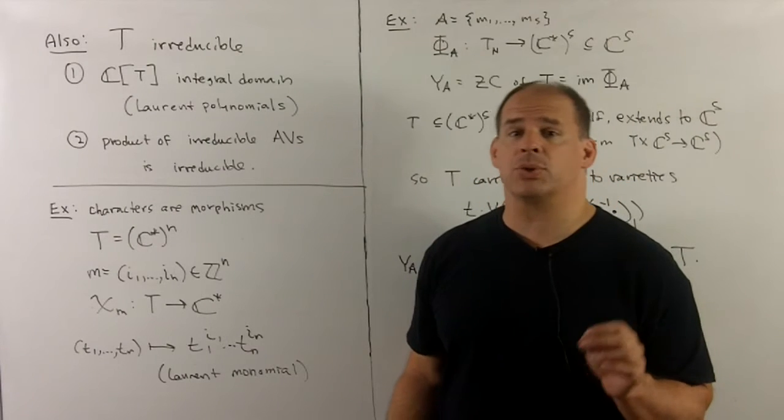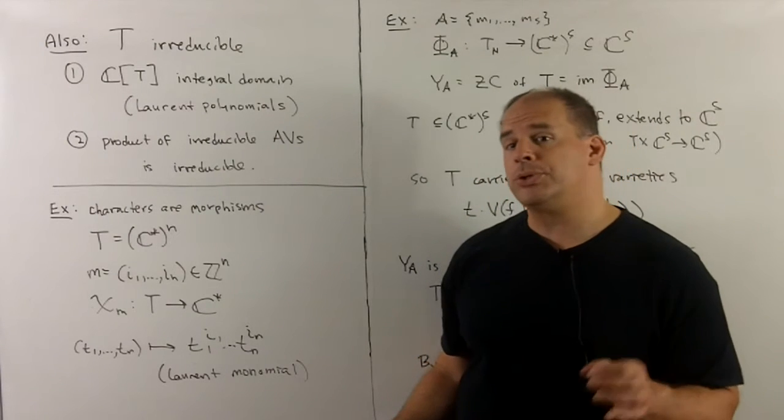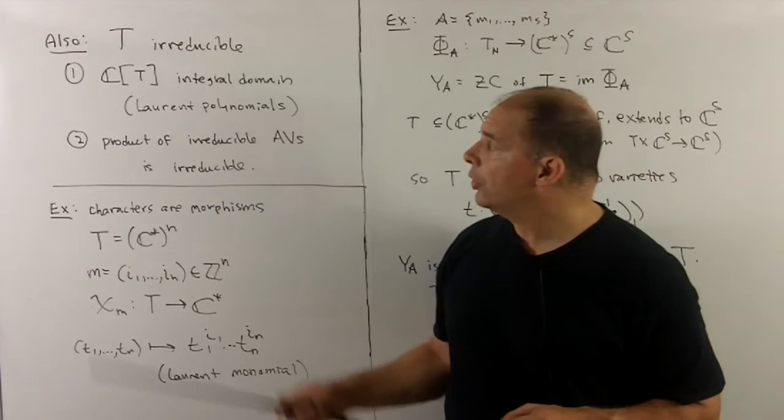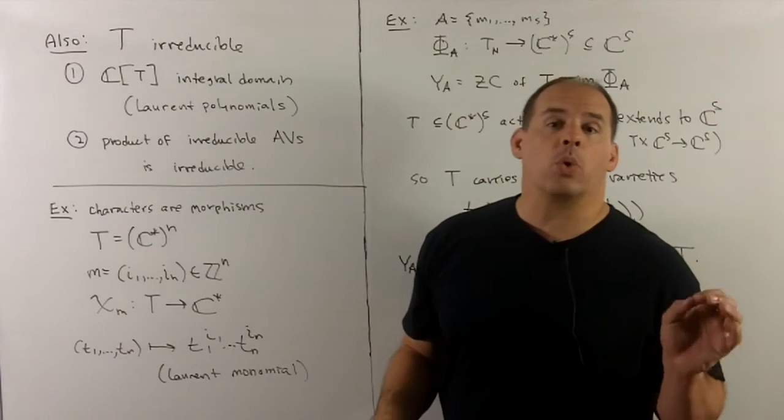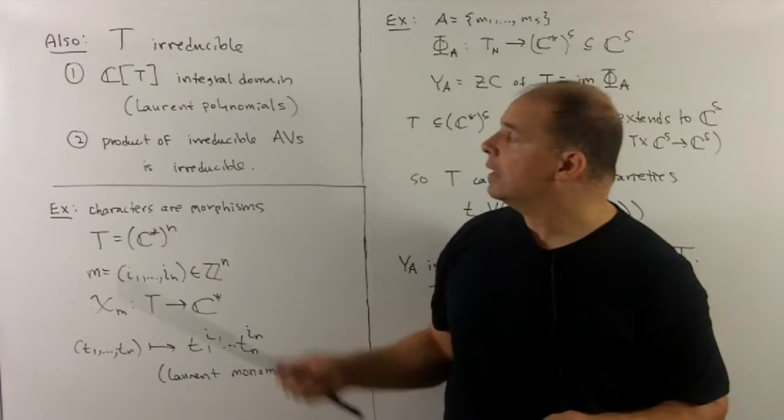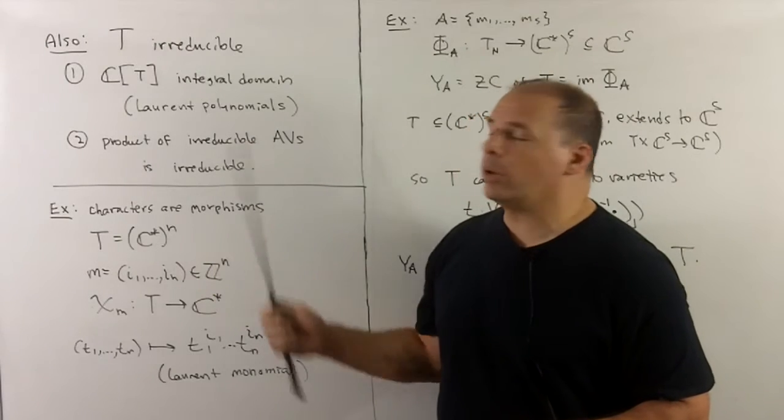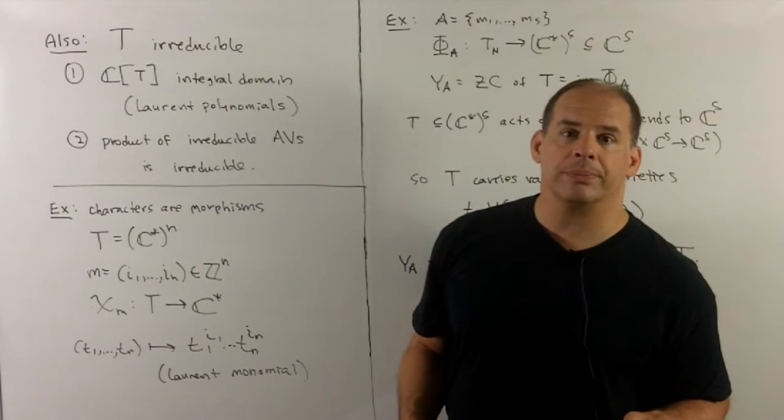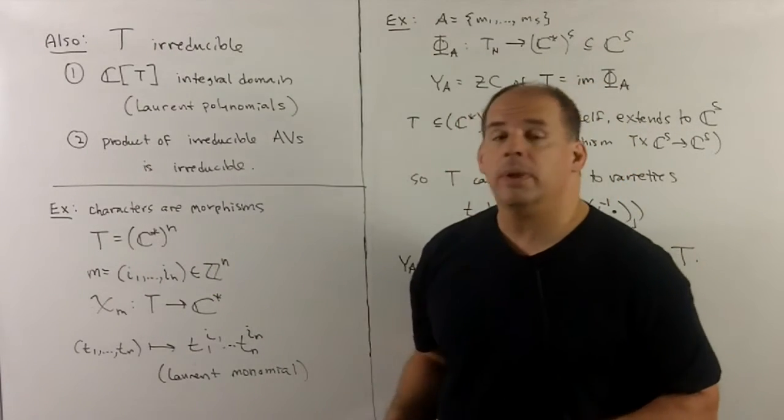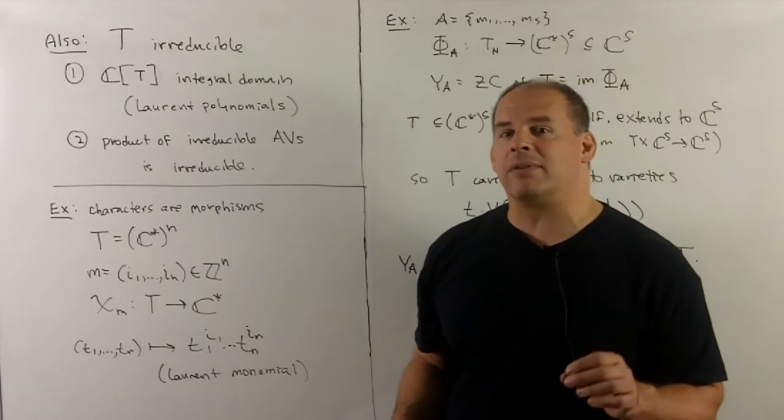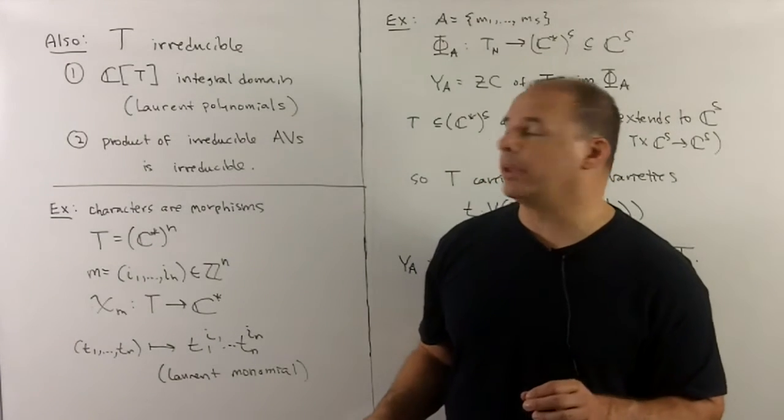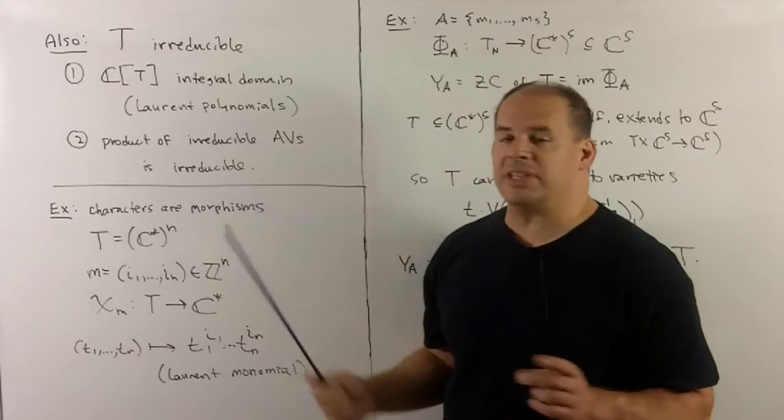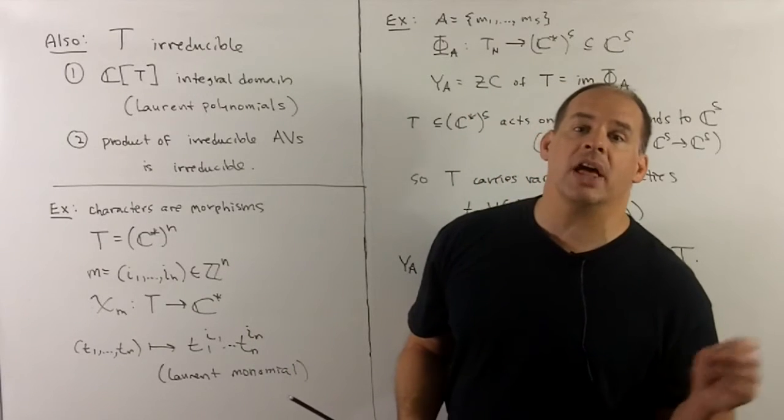We also have that a complex torus is irreducible. There are two ways that we can see this. First, we note that the coordinate ring is an integral domain. So here, we're just considering Laurent polynomials in several variables. Or, we note that the product of irreducible affine varieties is also irreducible. So here, we're just taking a product of C-stars, and C-star itself is irreducible.